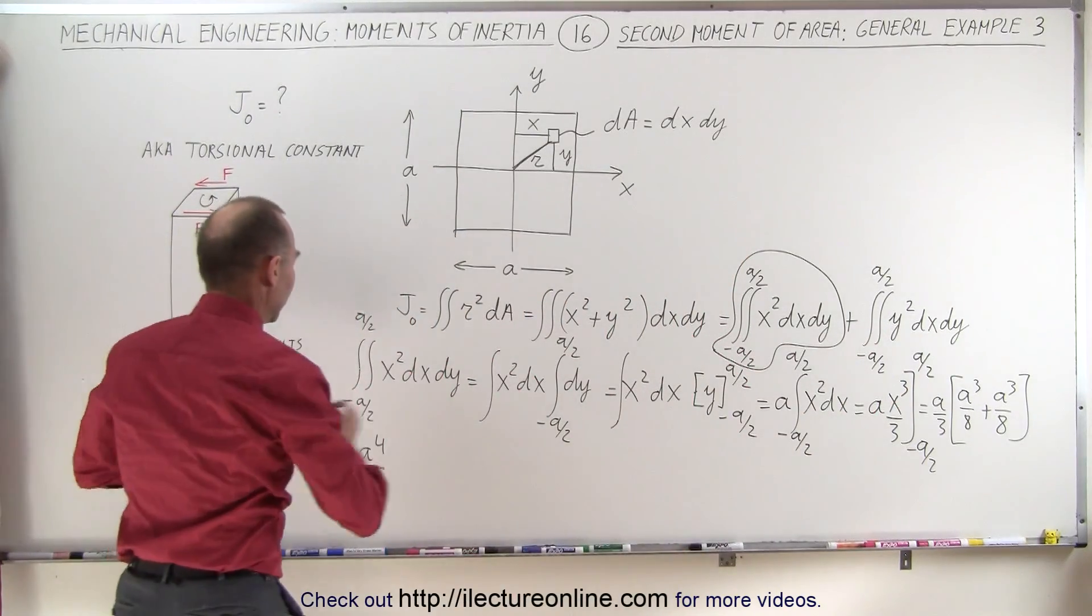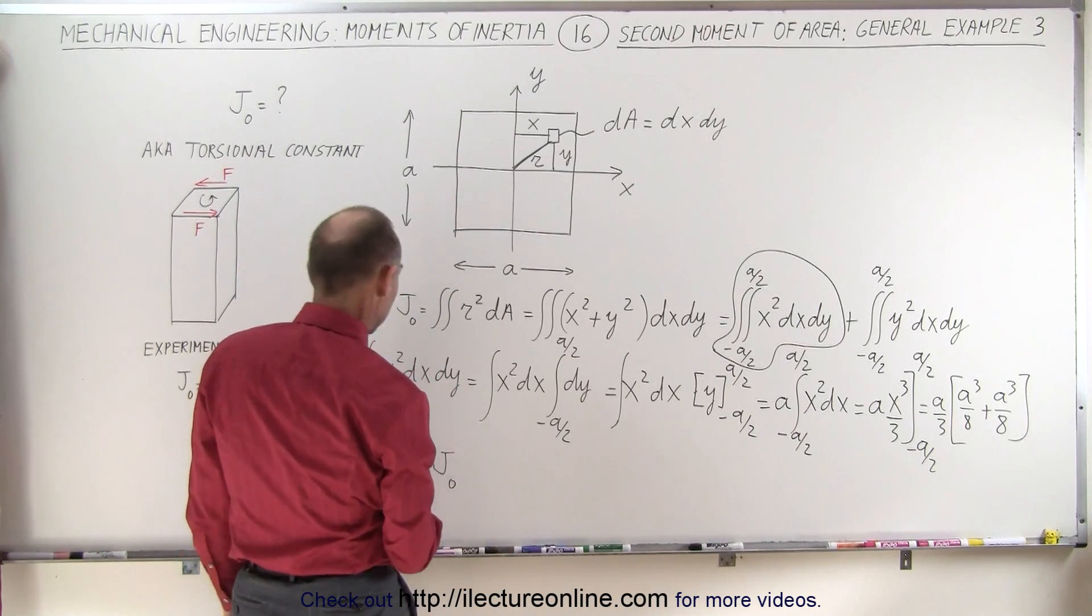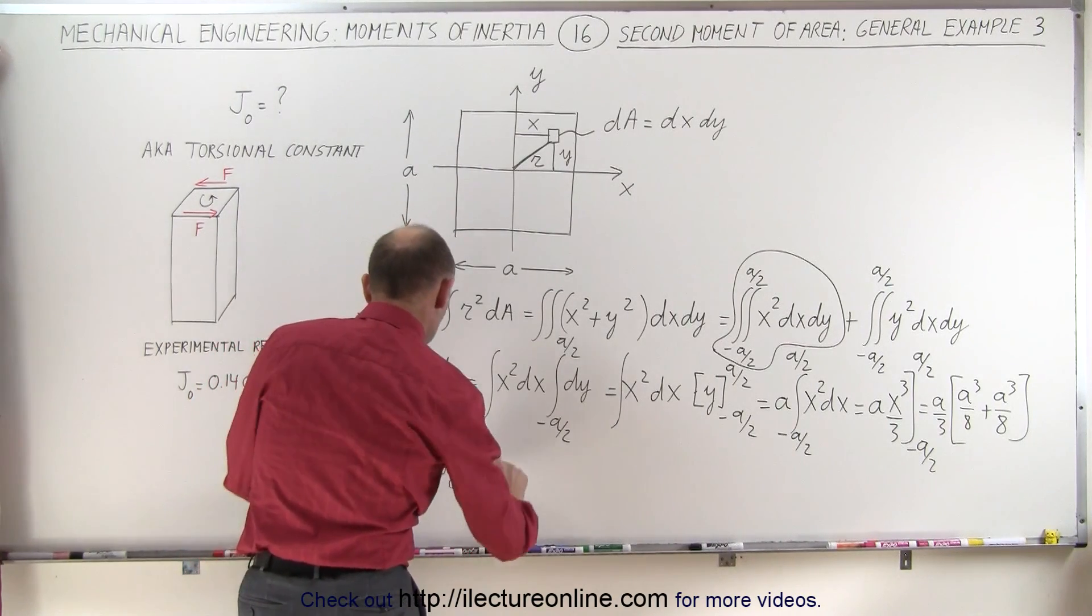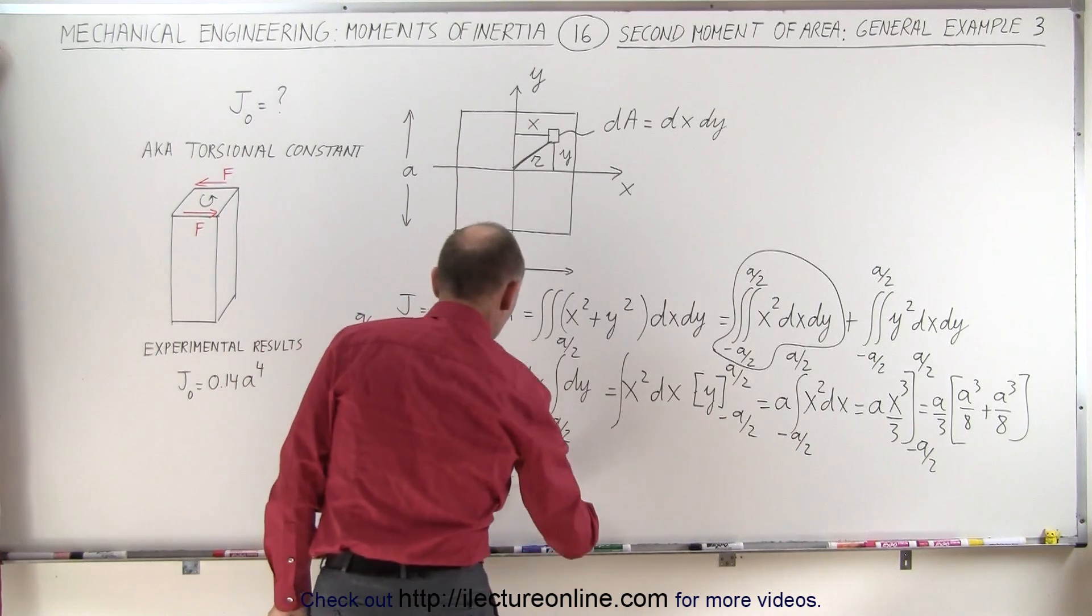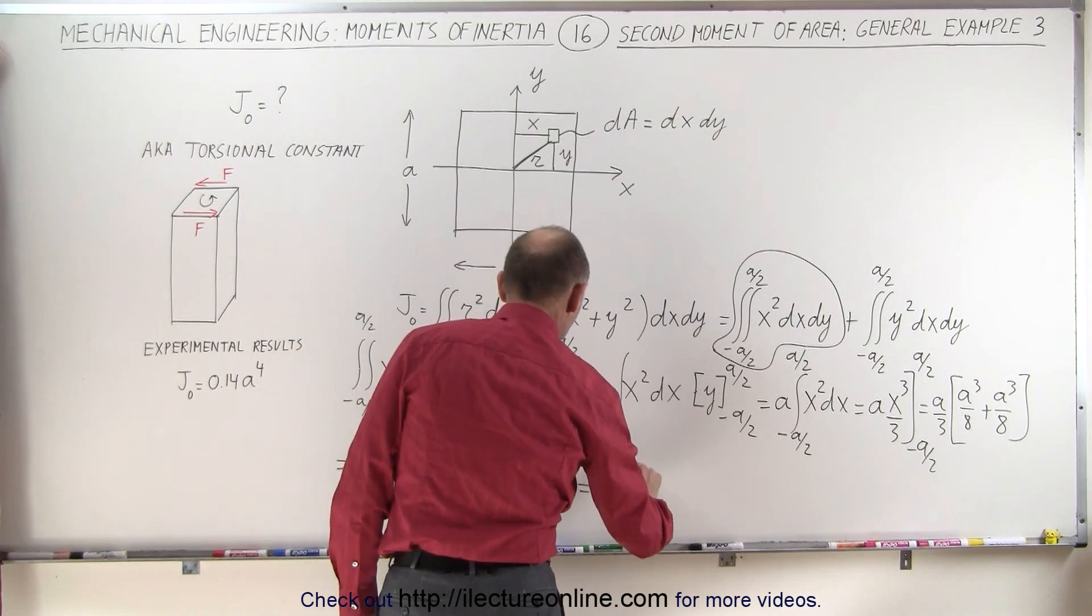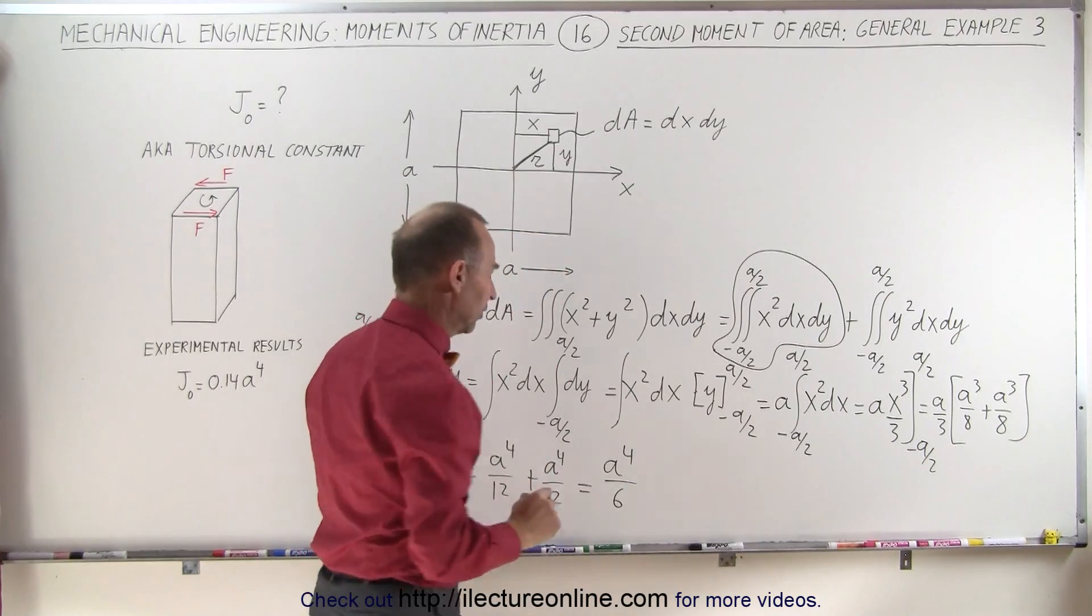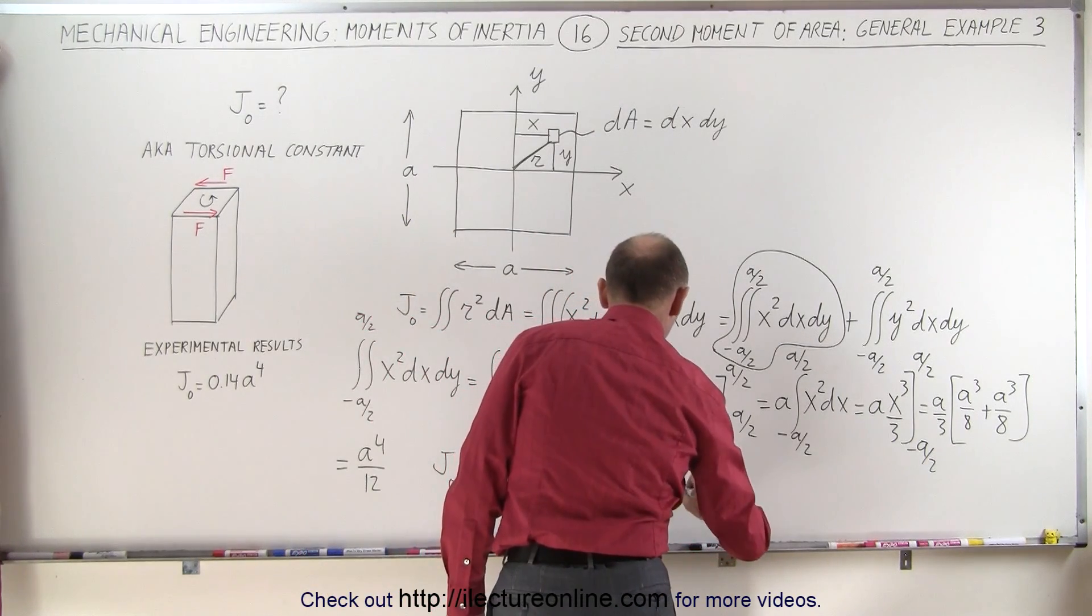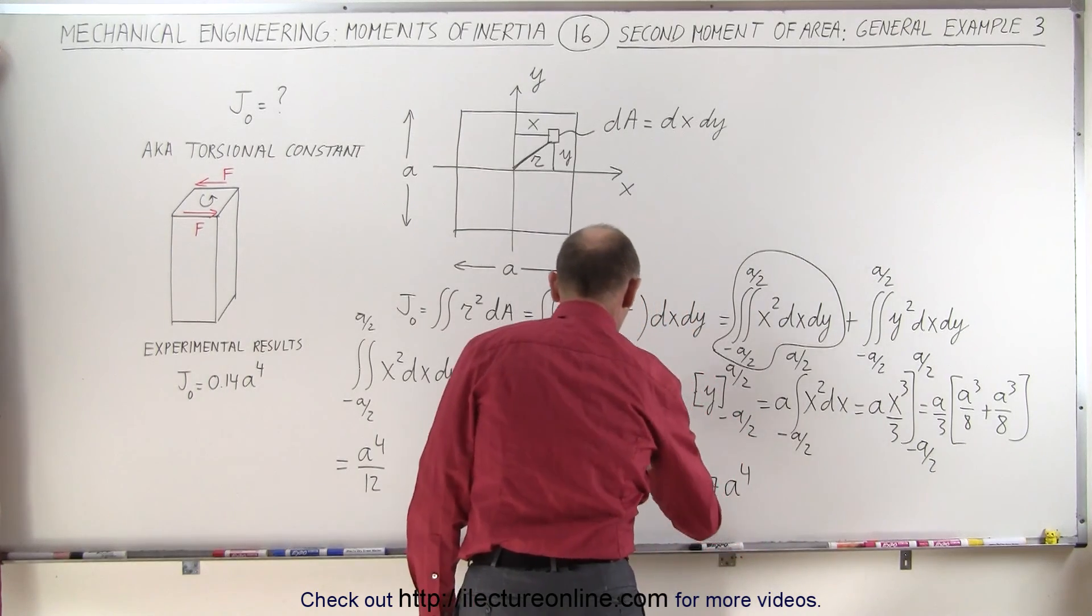So that means that the total second moment of area is going to be equal to a to the 4th divided by 12 for the first integral, plus a to the 4th divided by 12 for the second integral, which means that this becomes a to the 4th divided by 6. Now, 1 over 6 is equal to 0.167a to the 4th to 3 decimal places.